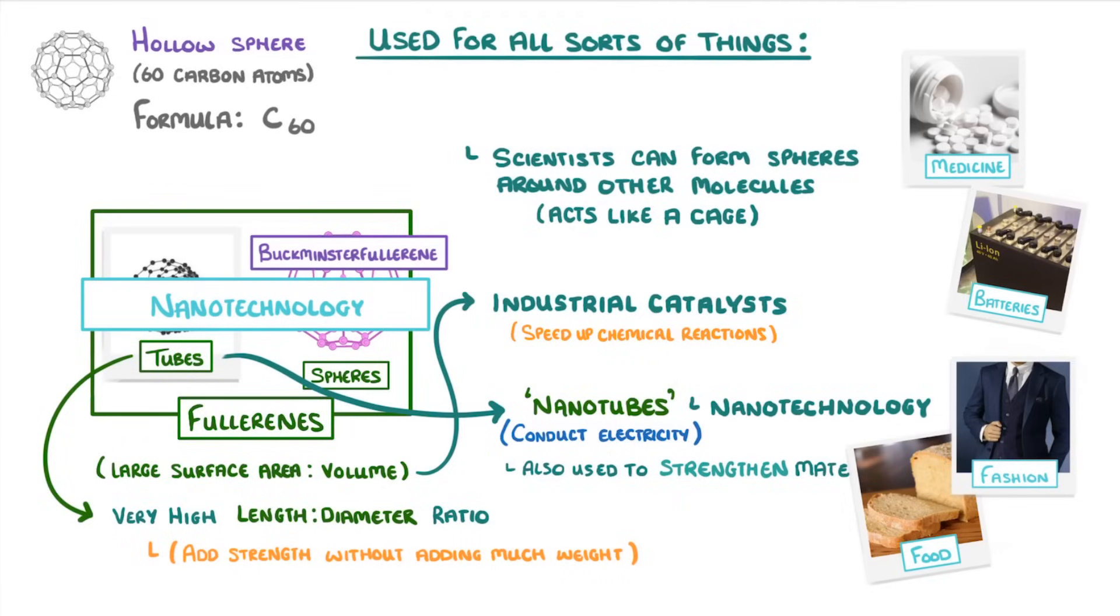The main point to take away, though, is that fullerenes are allotropes of carbon with hollow shapes, like spheres or tubes, and we use them for all sorts of things.